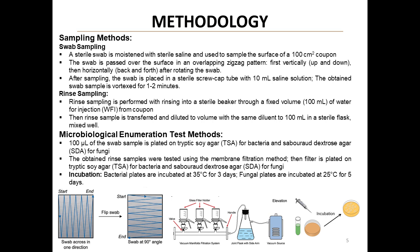We employed two distinct sampling methods in our study. The first was swab sampling. In this method, we moistened a sterile swab with sterile saline and used it to sample a 100 square centimeter area of our test coupons. We used a specific technique, passing the swab over the surface in an overlapping zigzag pattern, first vertically, then horizontally after rotating the swab. This ensures thorough coverage of the sampled area.